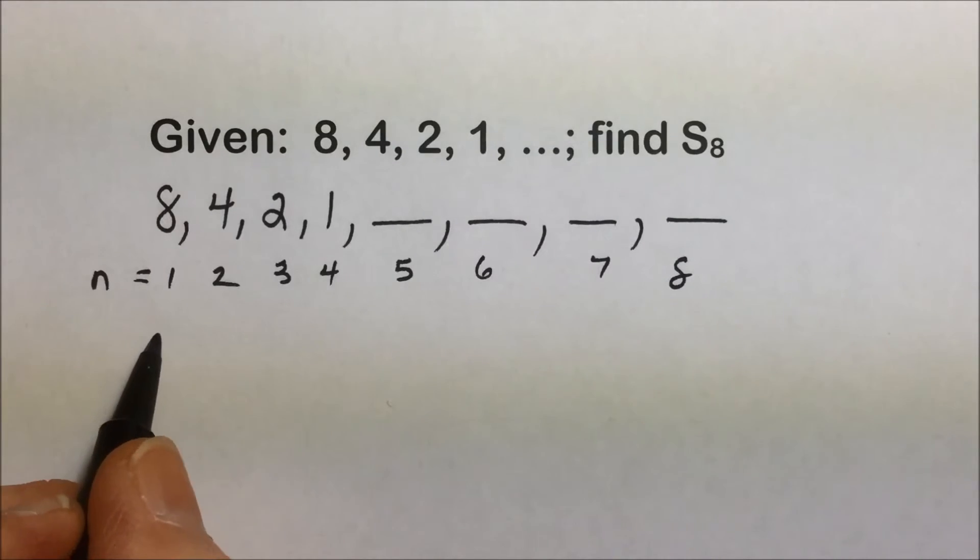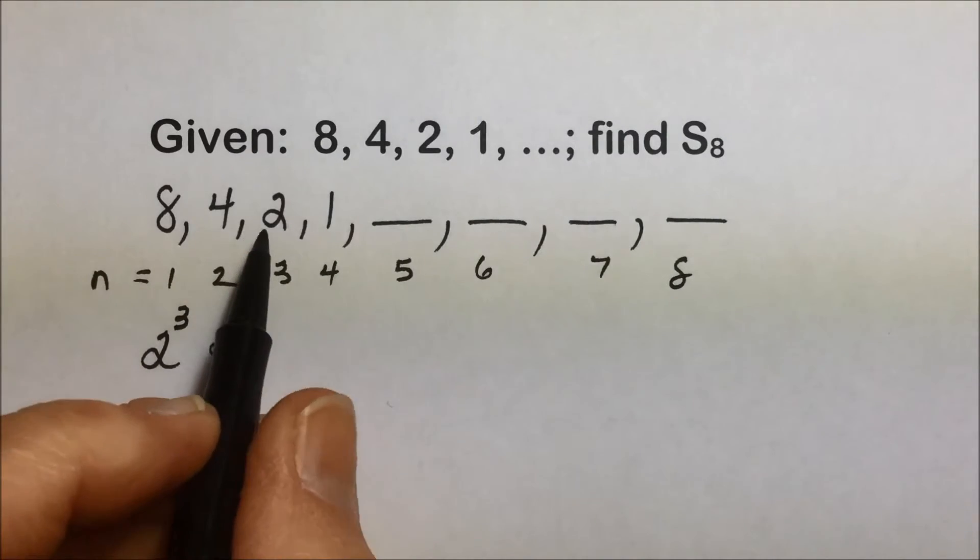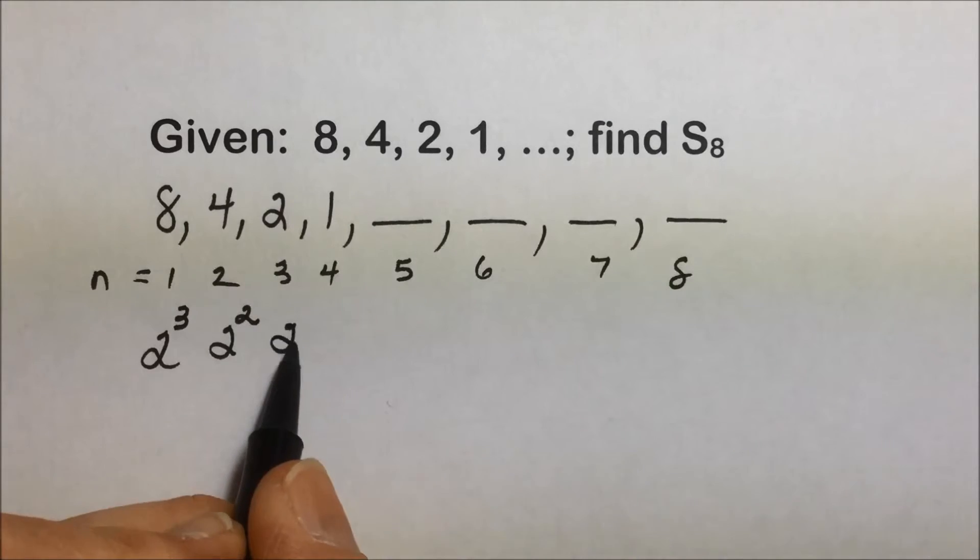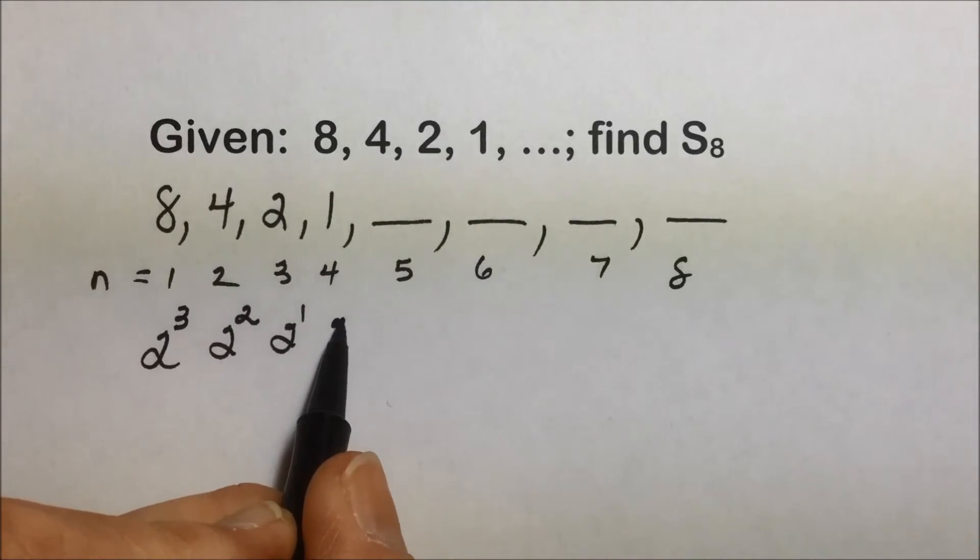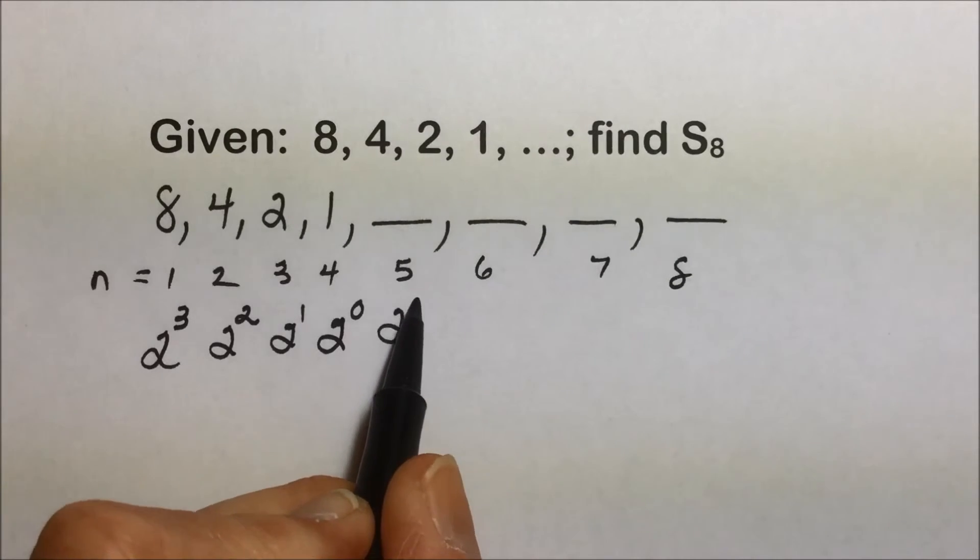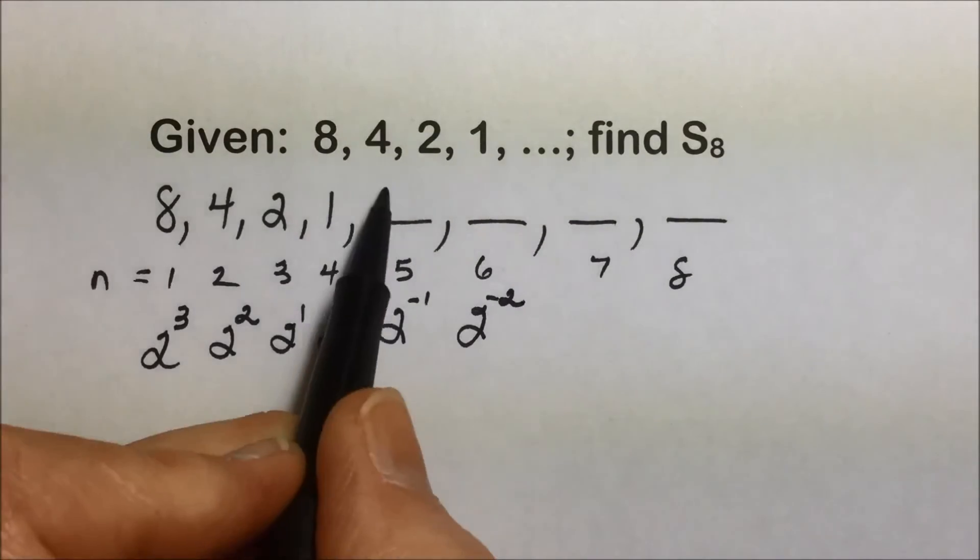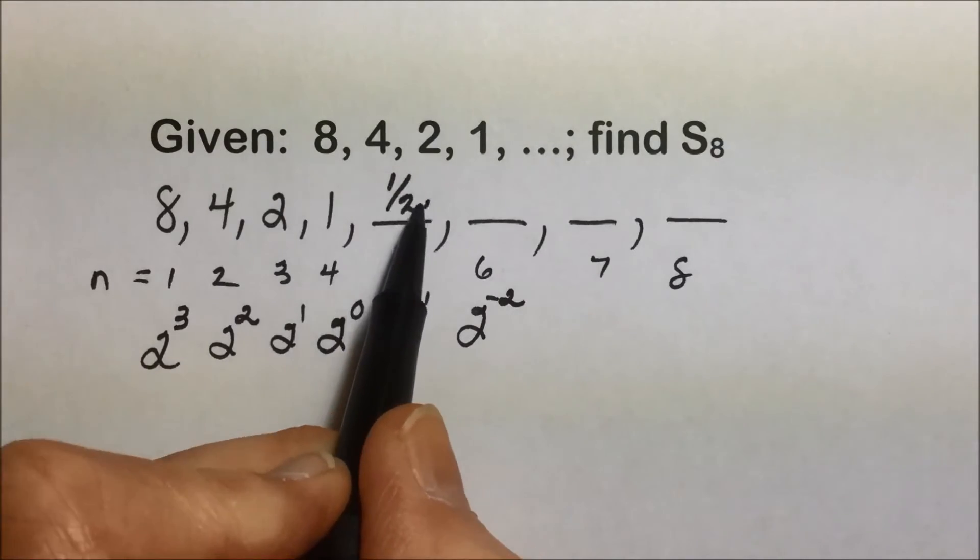Another way you could look at this is 8 is 2 to the third, 4 is 2 to the second, 2 is 2 to the first, 1 is 2 to the zero. This then, would be 2 to the negative 1, 2 to the negative 2, and so on, which leaves us with 1 half.